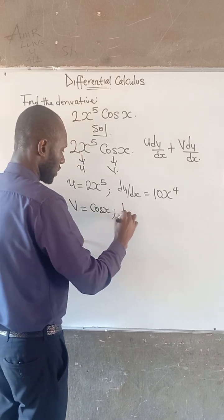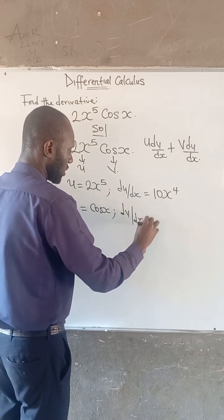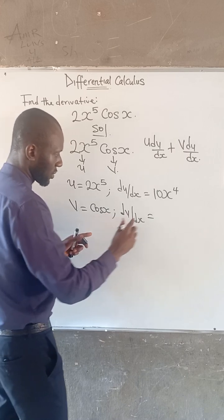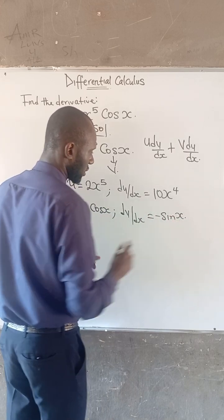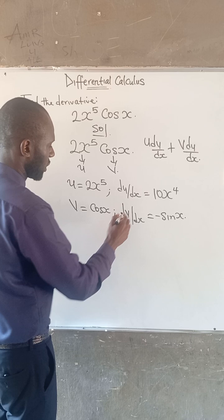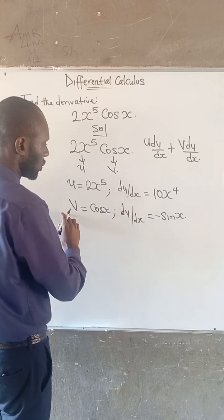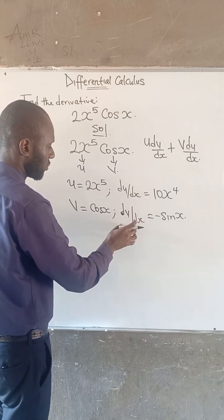Also, dv/dx, if we differentiate cos x, we have minus sine x. So now we have obtained v, u, dv/dx and du/dx.